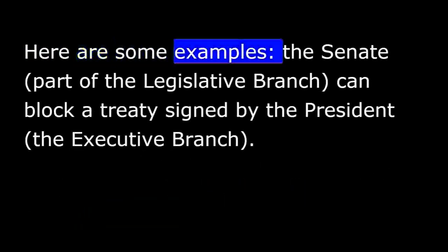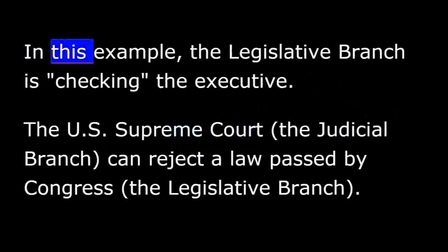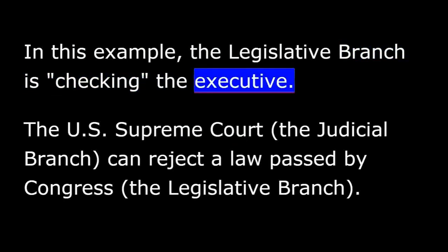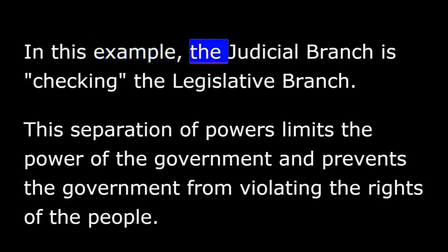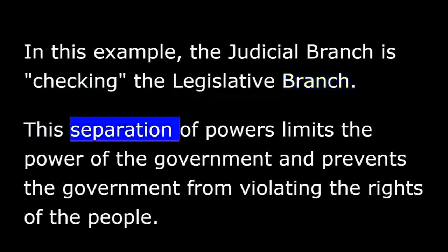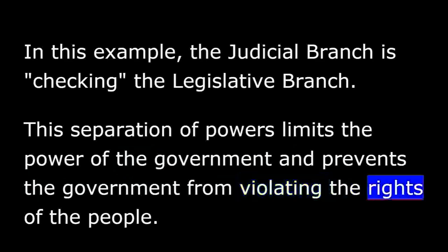Here are some examples. The Senate, part of the legislative branch, can block a treaty signed by the President, the executive branch. In this example, the legislative branch is checking the executive. The U.S. Supreme Court, the judicial branch, can reject a law passed by Congress, the legislative branch. In this example, the judicial branch is checking the legislative branch. This separation of powers limits the power of the government and prevents the government from violating the rights of the people.